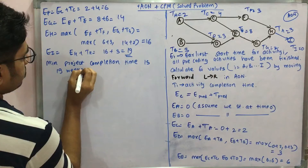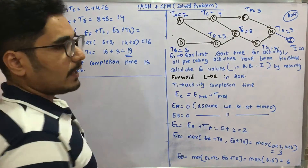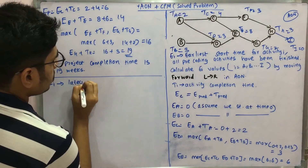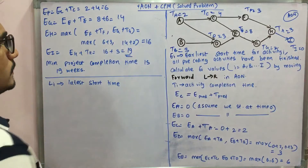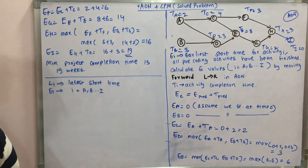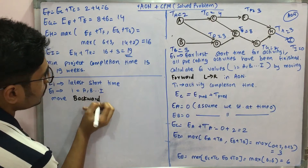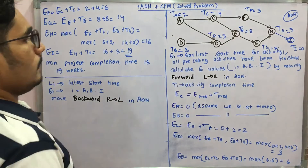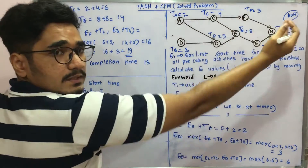After phase one, we move to phase two: calculating the latest start times, represented by LI. LI represents the latest start time for any activity. To calculate LI values for all activities A to I, you traverse the AON diagram in a backward direction — from right to left.